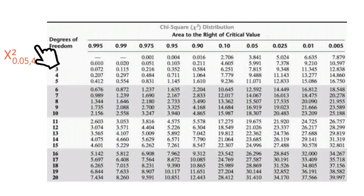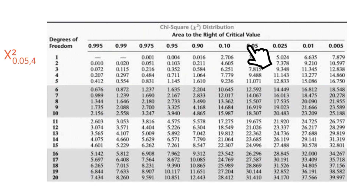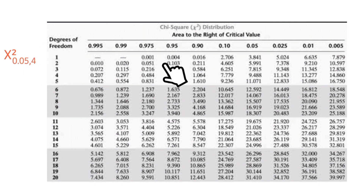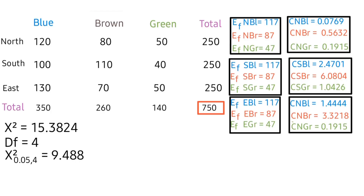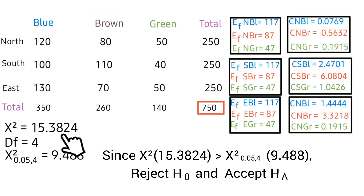Next is to find the p-value from the chi-square distribution table. Looking at alpha equals 0.05 and our degrees of freedom of 4, we trace the critical value. Since the chi-square test statistic of 15.3825 is greater than the critical p-value, we reject the null hypothesis and accept the alternative hypothesis.